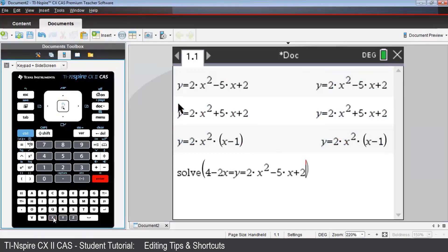But there's an extra y equals there that we don't want. So, move the cursor to the left until it's just to the left of the x squared coefficient 2. Then press left arrow del twice.